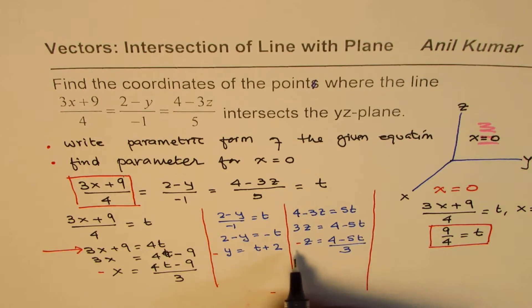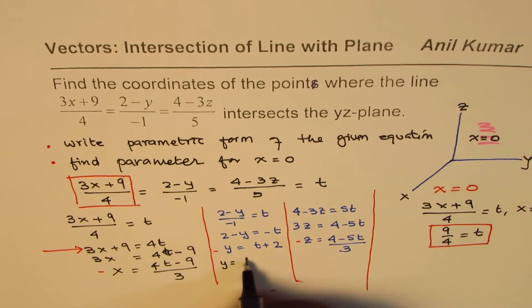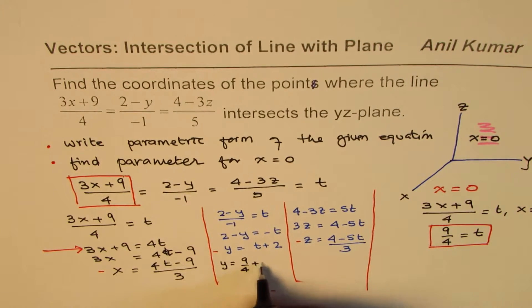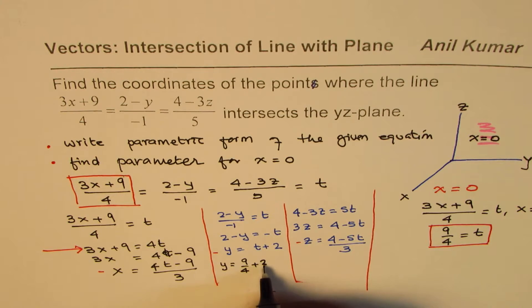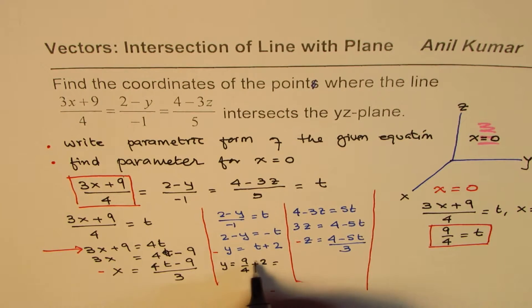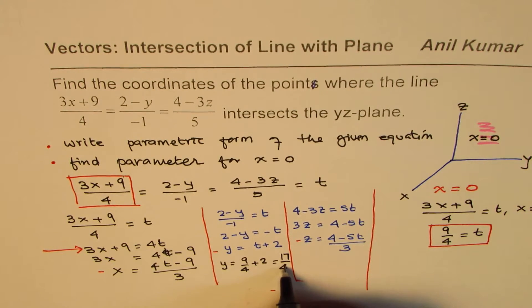What we get here is from here y = 9/4 + 2, which you could write as 4 times 2 is 8, 8 plus 9 is 17, so we get 17/4 as your value.